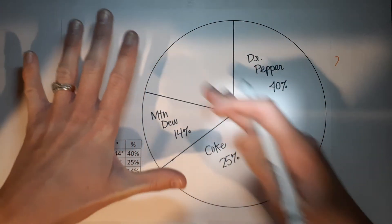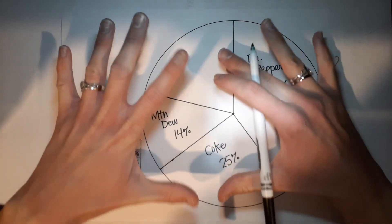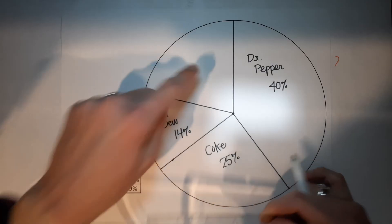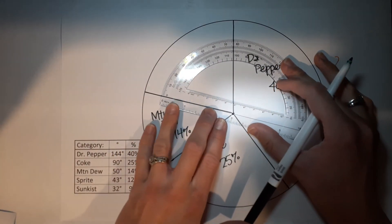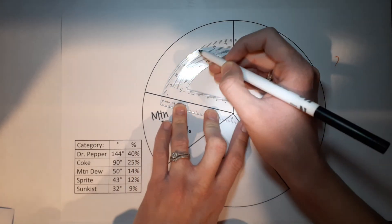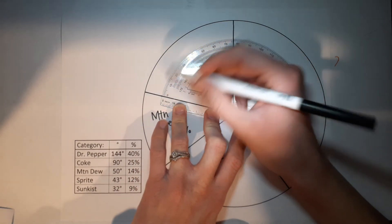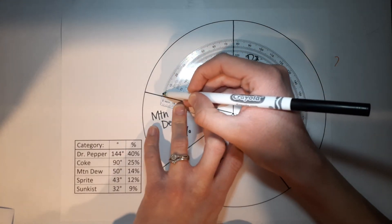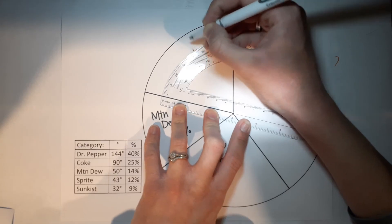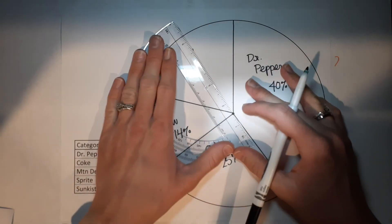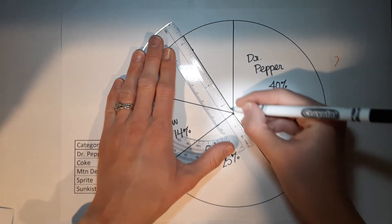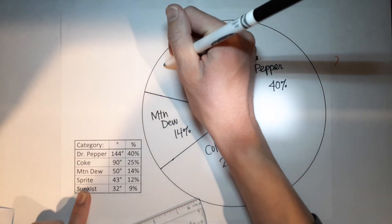Sprite is 43 degrees. Line up the protractor zero with the current line, hole at center, measure to 43 degrees. Mark it and draw the line. Always watch where your zero is to make sure you're using the right side. There's the Sprite slice — 12%.